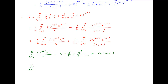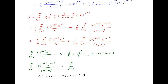Now we will evaluate the second summation in the expression for S. This is equal to summation n equals 1 to infinity of minus raised to the power n plus 1 times x raised to the power n plus 2 upon n plus 2. Put n plus 2 equal to j. Therefore when n equals 1, j equals 3. Therefore the second summation is equal to summation j equals 3 to infinity of minus raised to the power j minus 1 times x raised to the power j upon j.